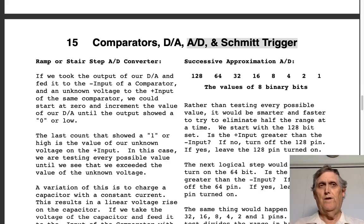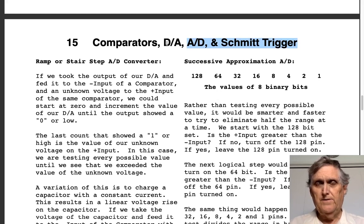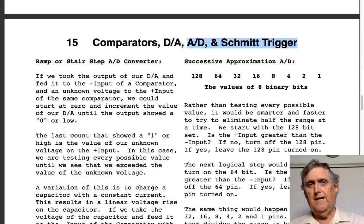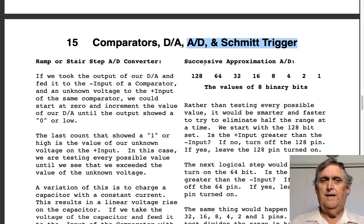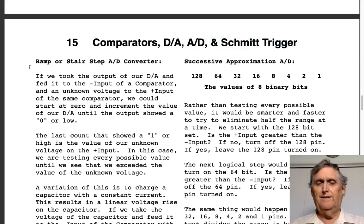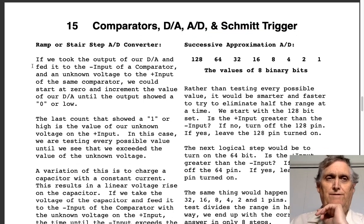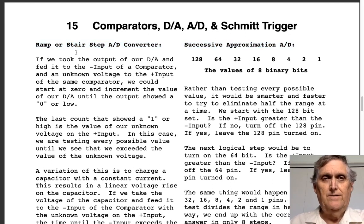All right, so today for week 14 we're going to finish Part B, the second part of Chapter 15. This is where we get into comparators, digital to analog, and now we're going to talk about A to D and Schmitt trigger. Hopefully I will not forget to share one little tidbit with you at the end — it's kind of fun, not that critical, but fun to know.